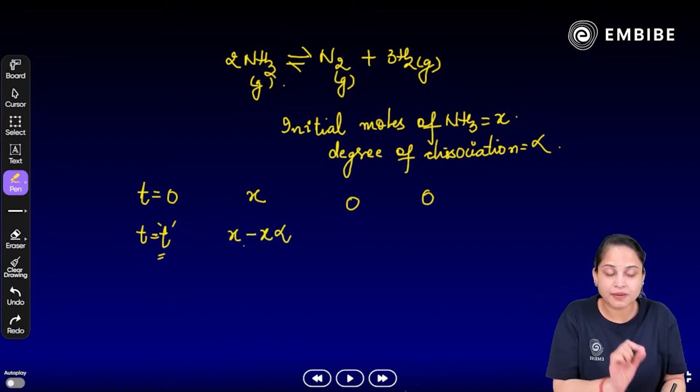x minus x alpha. Here you will not do stoichiometric coefficient in reactant. But you will do stoichiometric coefficient in product.